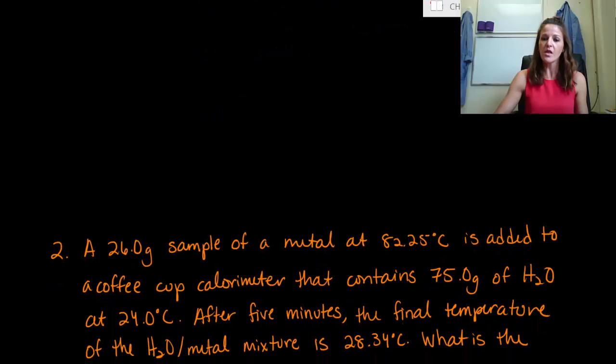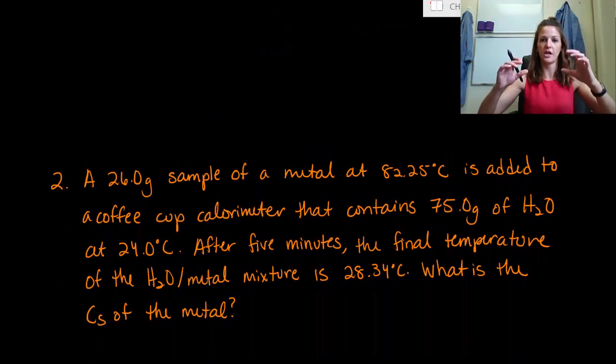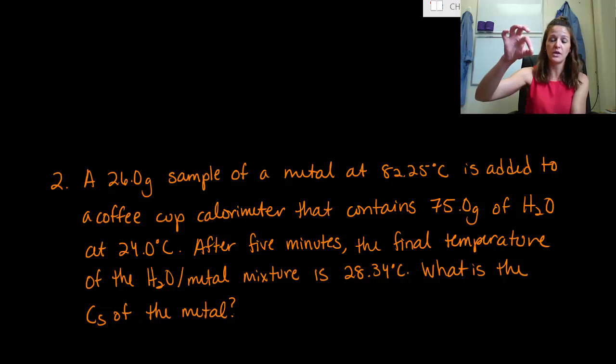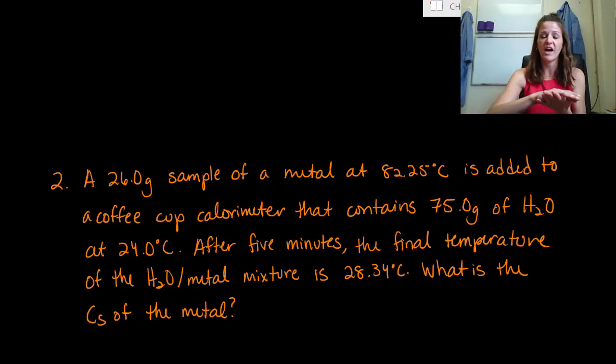Alright. So let's ramp it up a notch. Much longer problem here. So I'm definitely going to give you time to pause this video or take a picture. But basically you have a 26 gram sample of a metal that is at a temperature of 82.25 degrees Celsius, and it's added to a coffee cup calorimeter. And in this calorimeter, there's already contained 75 grams of water that is at the temperature of 24 degrees Celsius. You're adding the piece of metal to it, so it's a 26 gram piece of metal at 82 degrees Celsius. You throw it in the coffee cup, mix it up. After five minutes, the final temperature of that water metal mixture is now 28.34 degrees Celsius. So we're looking for the specific heat of the metal. Go ahead and try to calculate that. Take your time. Watch for that negative sign.